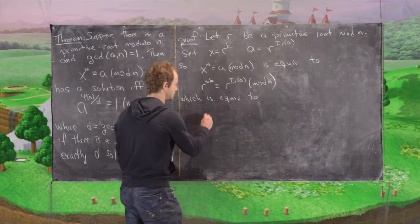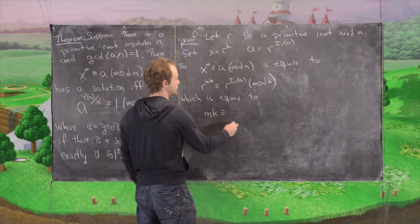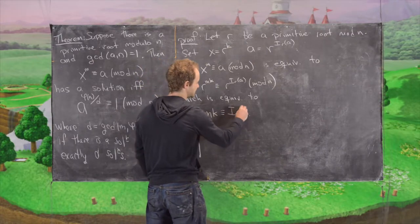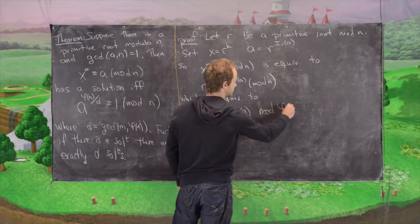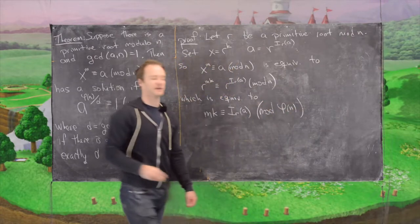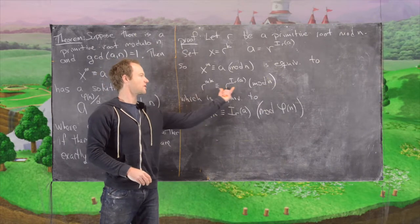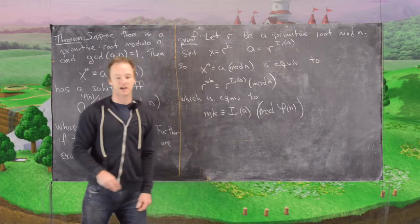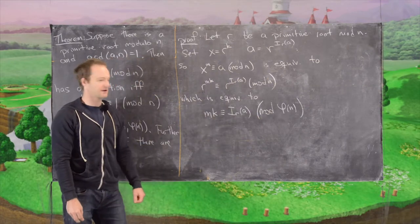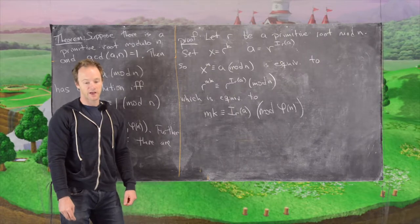This is equivalent to m times k congruent to the index of r of a modulo phi of n. Remember, the whole terms work modulo n, but the exponents work mod phi of n. That's an important thing to remember.